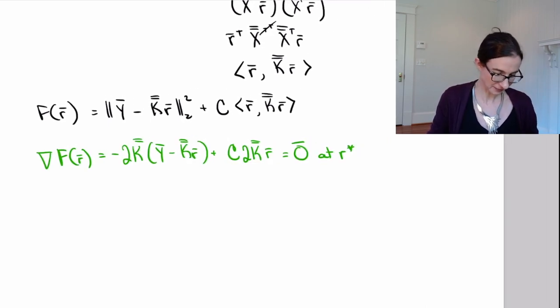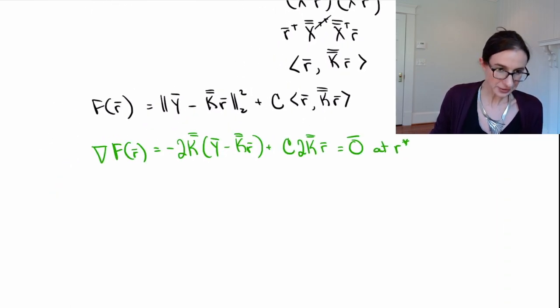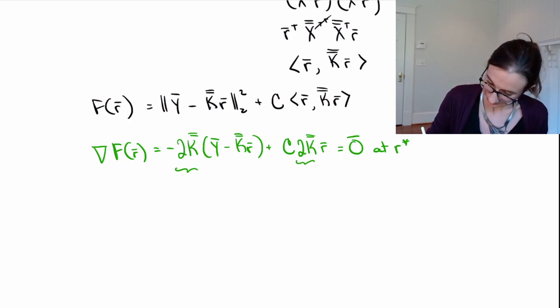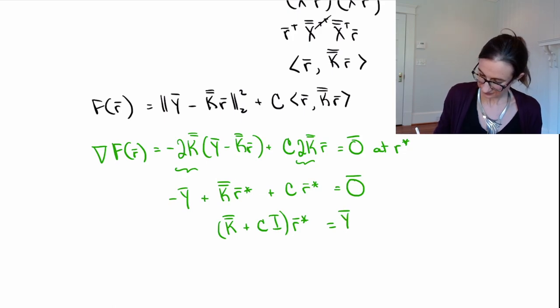So this has to equal zero at r star. And we just need to solve for that. Okay. So let's do it. Now the first thing we got to notice is that all of these terms have a 2K in them. So we can actually ignore the 2K and just set everything else to zero. So let's do that.